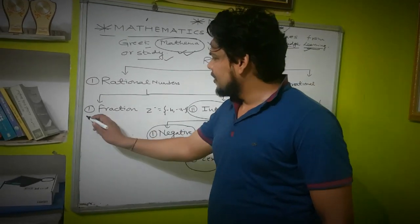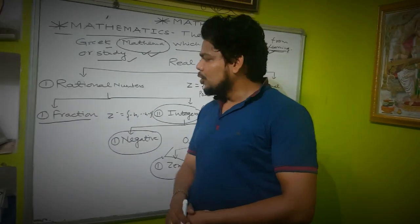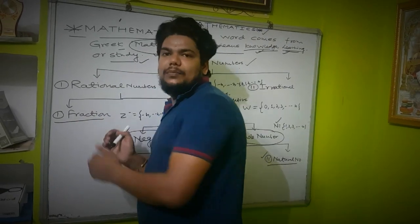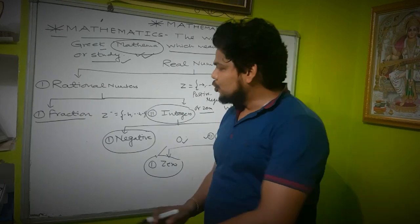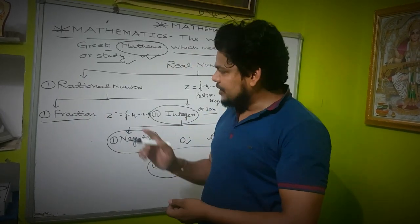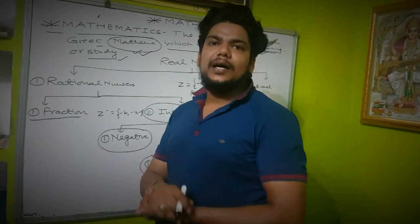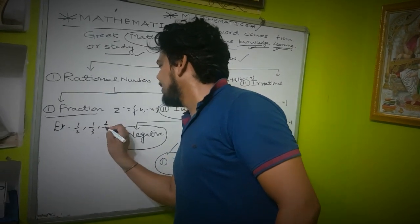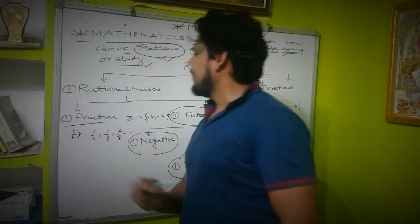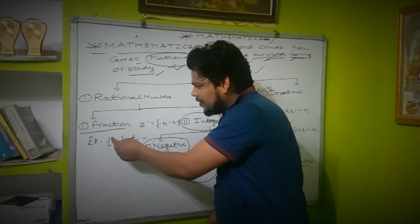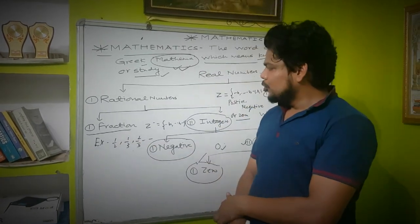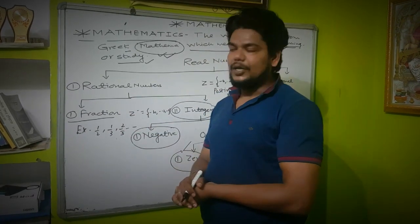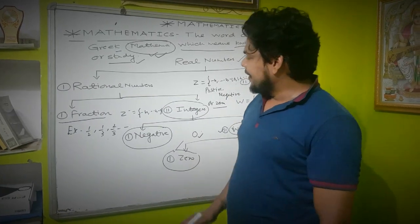Next topic: what is a fraction? A fraction is used to represent a part of a whole number. It consists of two parts: the numerator and the denominator. For example, 1/2, 1/3, 2/3, and so on. Here, 1 is the numerator and 2 is the denominator. So a fraction is the part of a whole number.